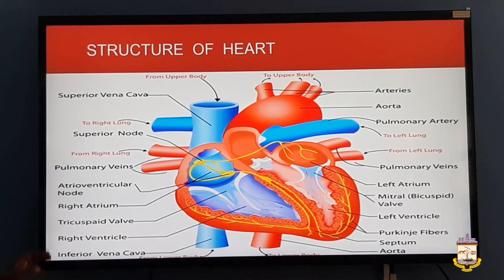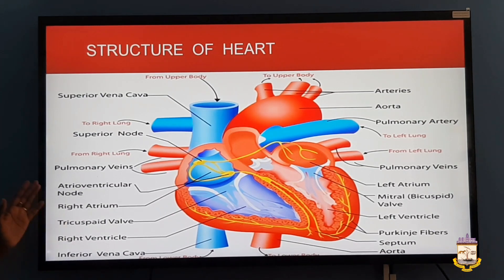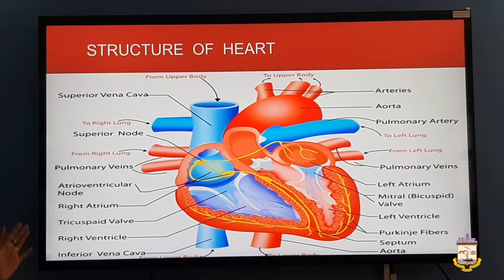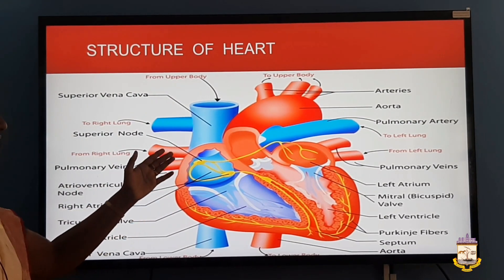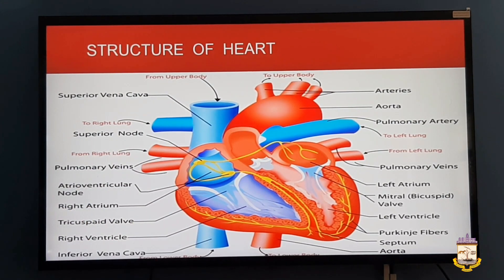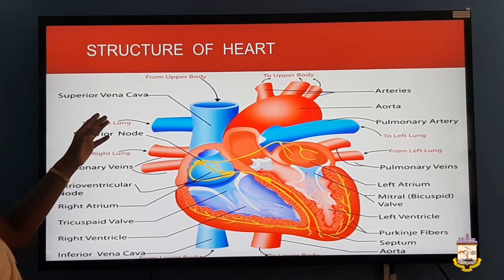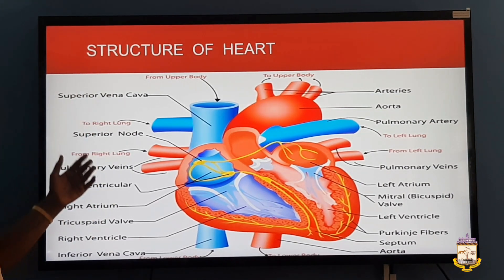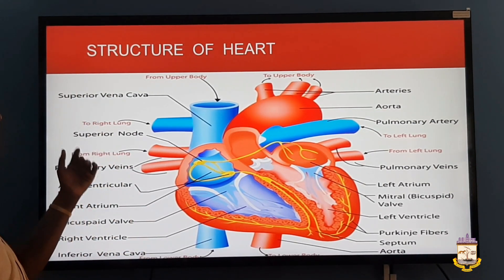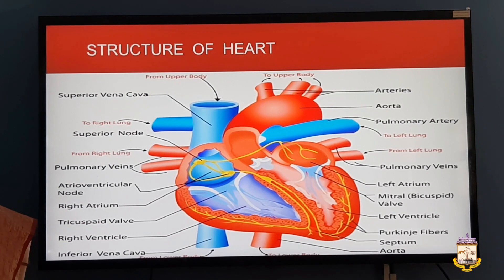In the picture, the right side is marked in blue and the left side in red. The right side carries deoxygenated blood and the left side carries oxygenated blood. The right auricle receives deoxygenated blood from the upper and lower parts of the body through the superior vena cava and inferior vena cava.